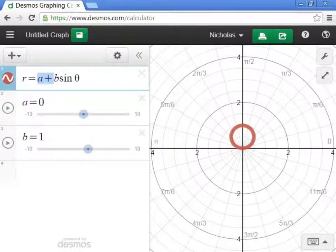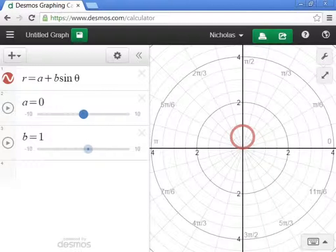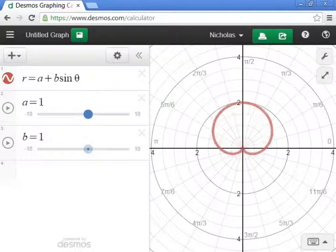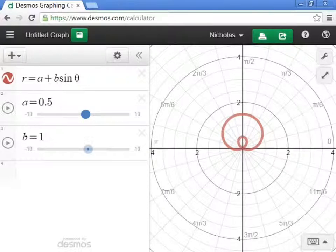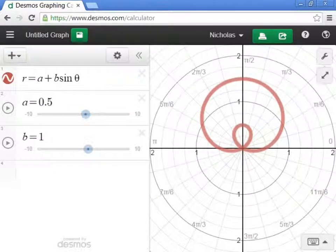But if we add the A in there, that's when we start getting the limicon. If I move this slider over, it changes my value of A, and we start seeing a little loop right here.